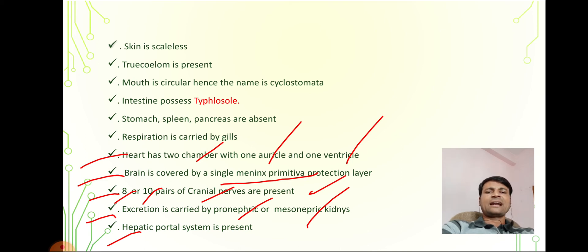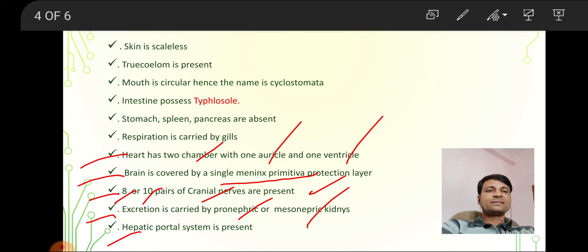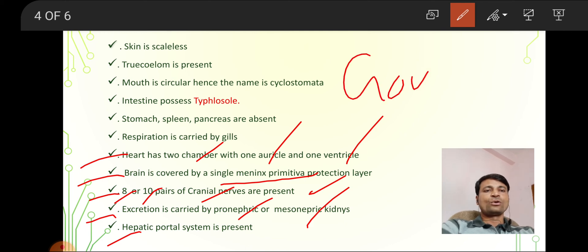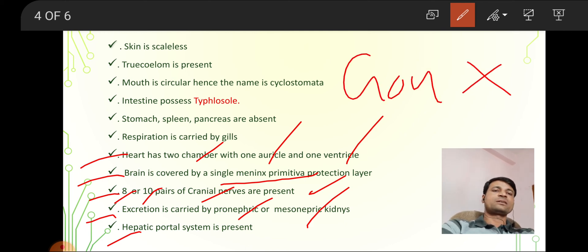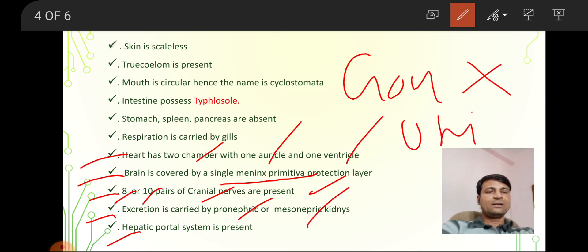Three more characters: renal portal system is also present. Gonoducts are absent. Some species are unisexual and some are bisexual.